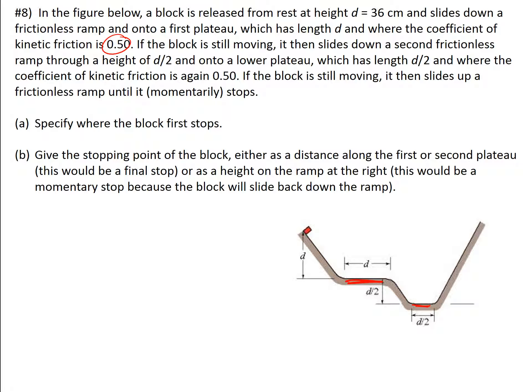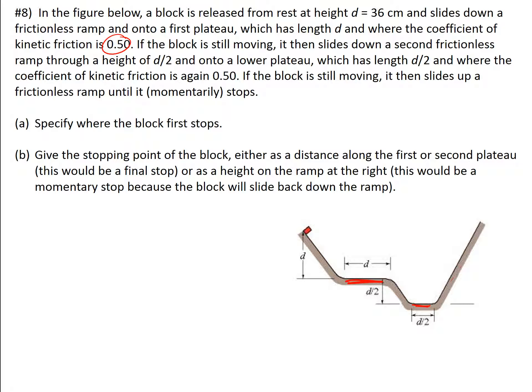If the block is still moving, it then slides up the frictionless ramp until it momentarily stops. We need to specify where the block first stops — either as a distance along the first or second plateau, or as a height on the final ramp. Our givens: d equals 36 centimeters or 0.36 meters, and coefficient of kinetic friction mu-k equals 0.50.